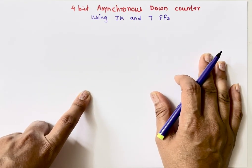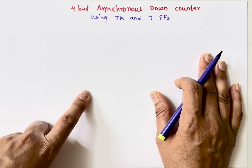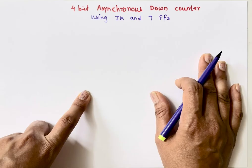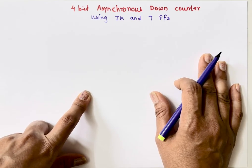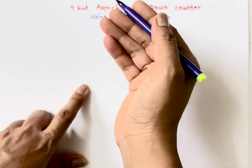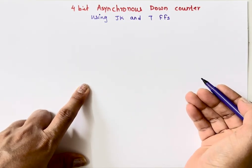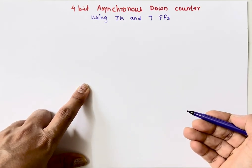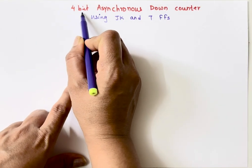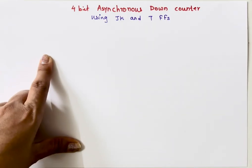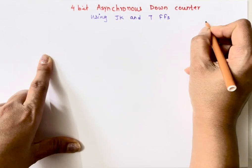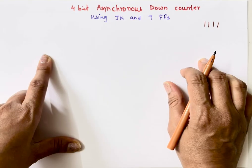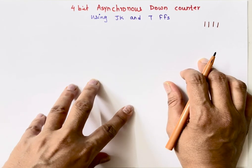Hello everyone, welcome to my channel. You are learning with Dr. Shobhanikam. In this video I'll talk about the four-bit asynchronous down counter. A counter is a circuit which counts number of clock pulses. A down counter counts in the downward direction, from the highest value down to zero. This is a four-bit counter, so the maximum it can count is 1111, which equals 15.